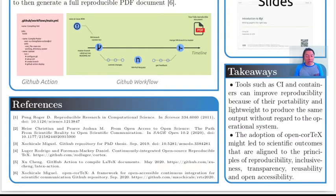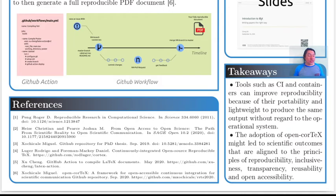The second takeaway is that the adoption of OpenCortex might lead to scientific outcomes that are aligned to the principles of reproducibility, inclusiveness, transparency, reusability, and open accessibility. Last but not least, don't hesitate to get in touch — click on the GitHub repository and fork it. Thank you very much for your time.